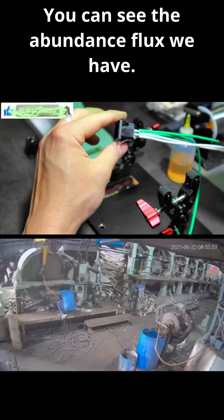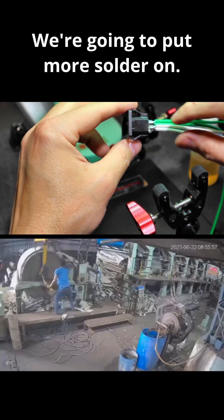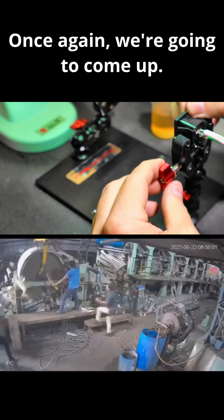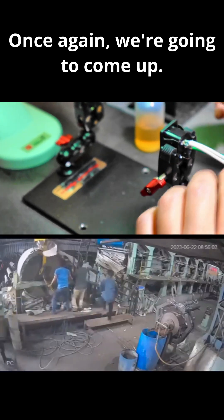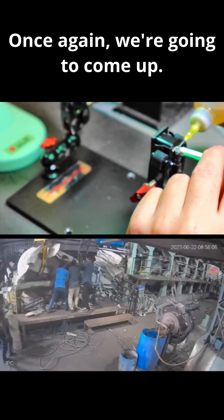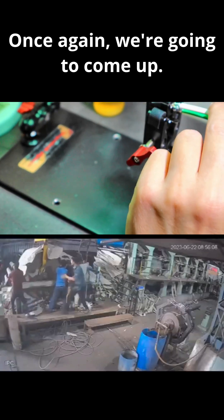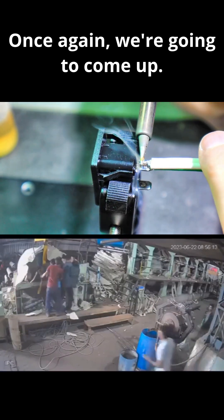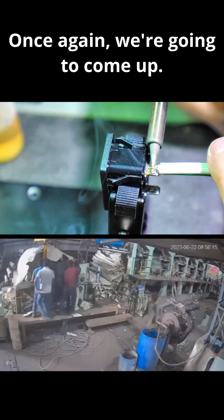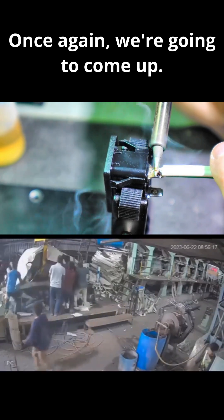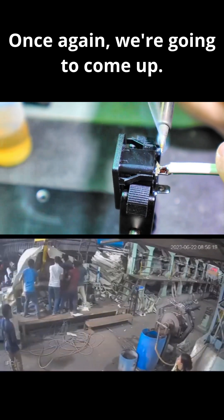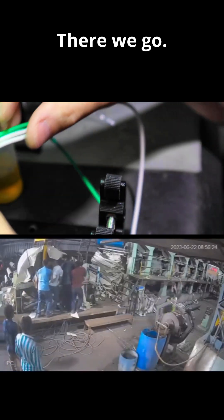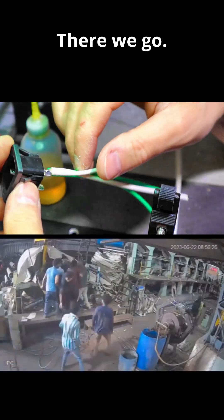You can see the abundance of flux we have. We're going to put more solder on. That's a dry joint. And once again, I'm going to come up, there we go.